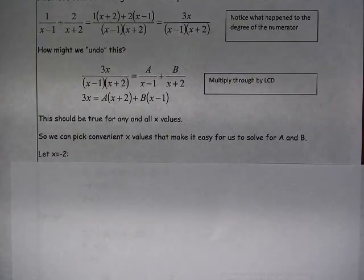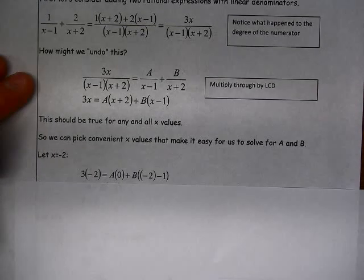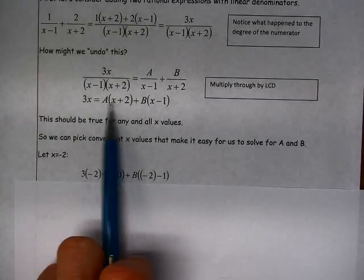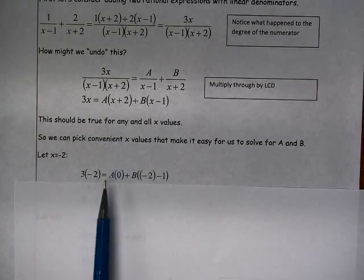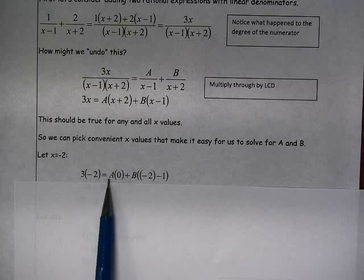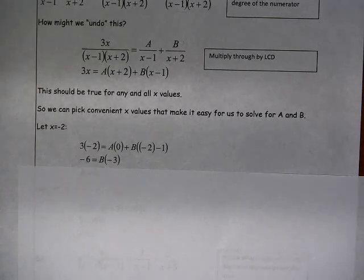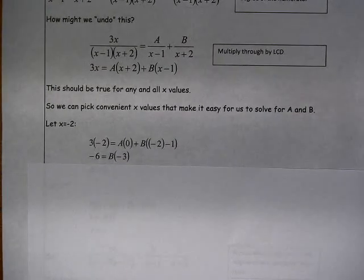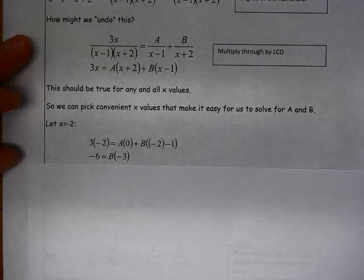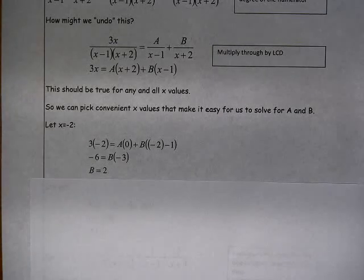Let x equal negative 2. When I do that, this expression becomes this. I substitute negative 2 in. This entire A term disappears. And I end up with negative 6 on the left and B times negative 3 on the right. So I get B is equal to 2.